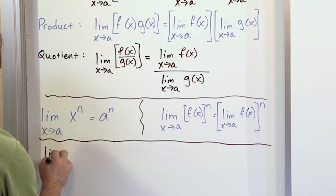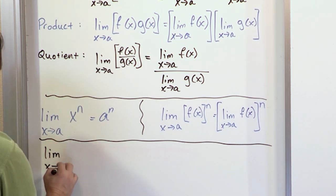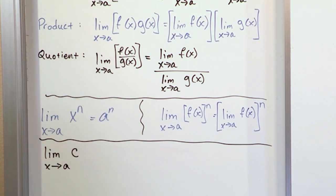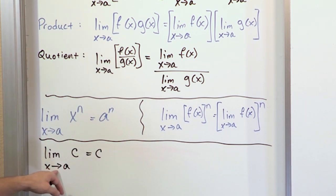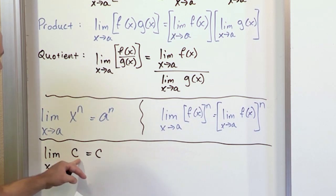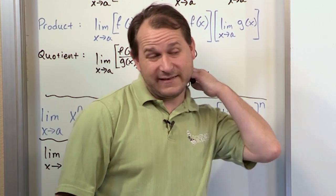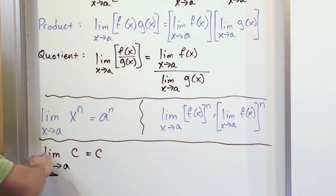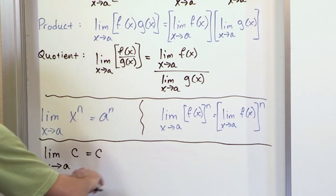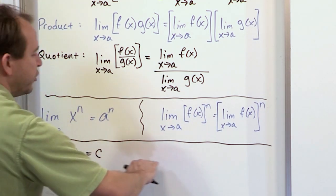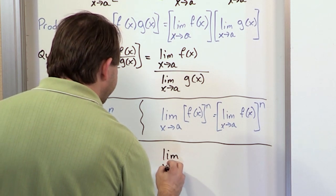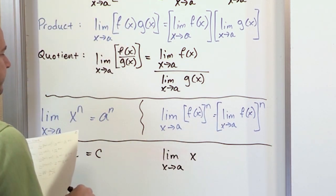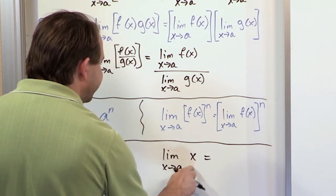Here's a very simple one. If you have the limit as x approaches a of some constant — c is not a variable, it's actually just a constant — what do you think the limit is going to equal? It's just going to be the same number, c. Because basically what's happening is you attempt to plug it in, but there's nowhere to put it. So the limit is just itself. This is the same thing as thinking about: if f of x is just a constant, then it's just a horizontal line. Any value of x you approach, you're going to reach the same value. This dovetails with the limit as x approaches a of just the simple function x — you plug it in and that's going to be equal to a.